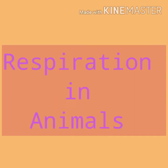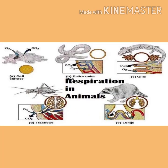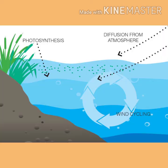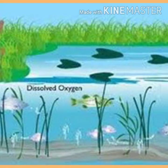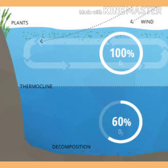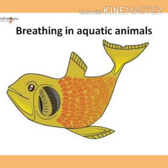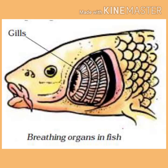Animals have different organs for taking up oxygen from the environment and for getting rid of the carbon dioxide produced. Terrestrial animals can breathe the oxygen in the atmosphere. But animals that live in water need to use the oxygen that is dissolved in water. Since the amount of dissolved oxygen is fairly low compared to oxygen in the air, the rate of breathing in aquatic organisms is much faster than in terrestrial organisms. Fish take in water through their mouth and force it past the gills, where the dissolved oxygen is taken up by the blood.